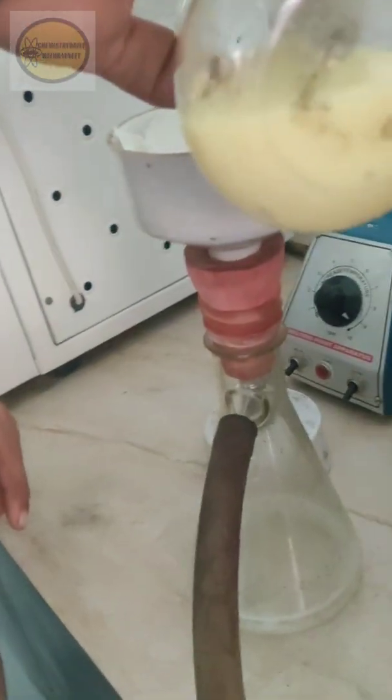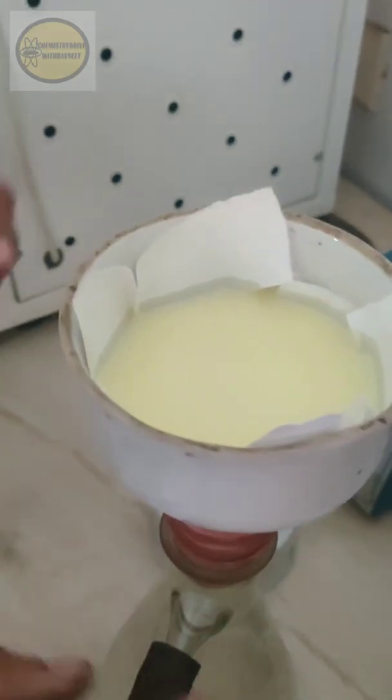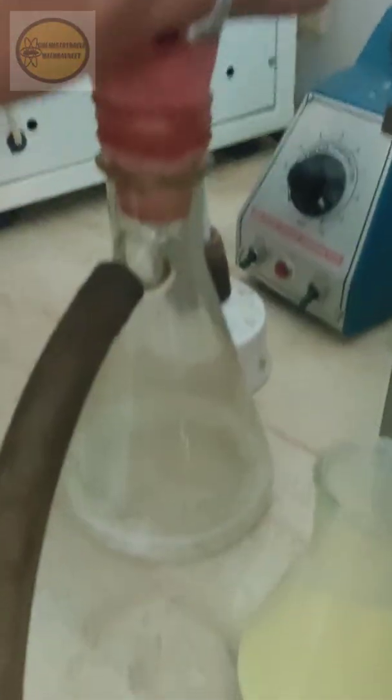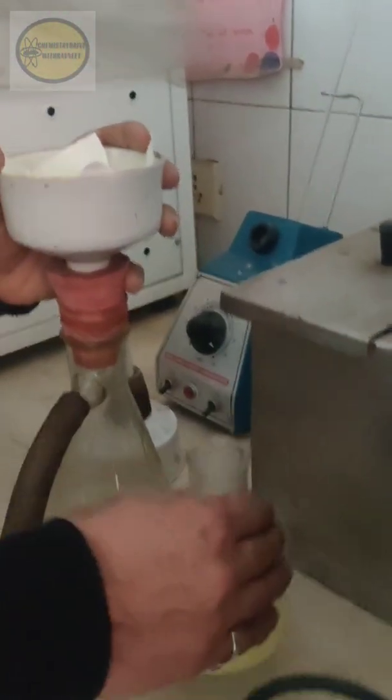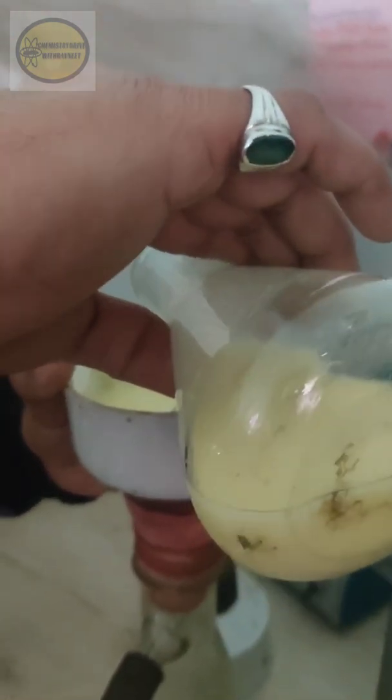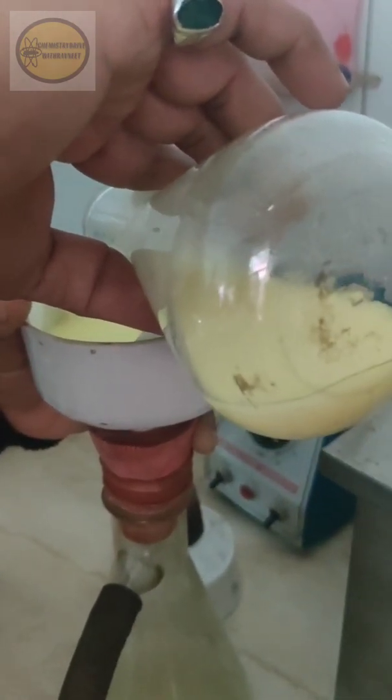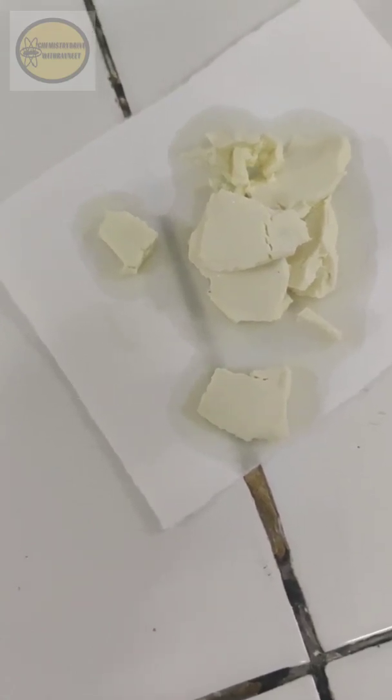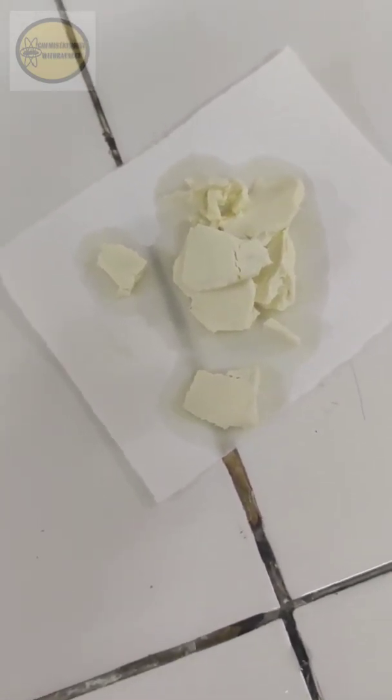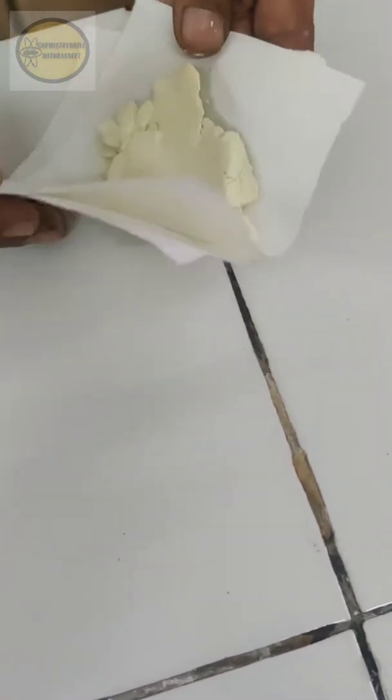Now we are filtering this whole content using Buchner funnel. As you can see the filtrate is going down and we are just obtaining our solid precipitates. So as you can see we have obtained the pale yellow crystals of para-nitroacetanilide. Now after this you need to dry it between the folds of filter paper. So dry it completely and then after that do the recrystallization.